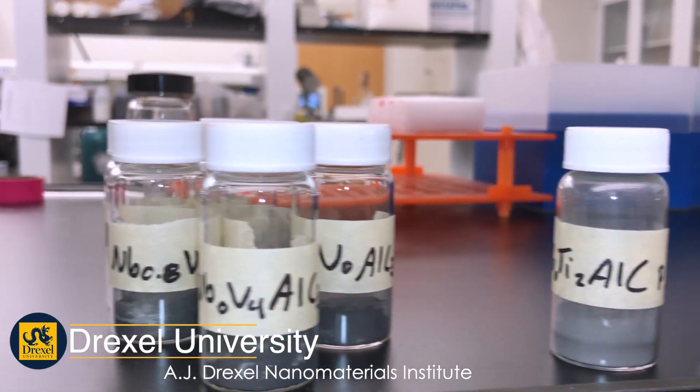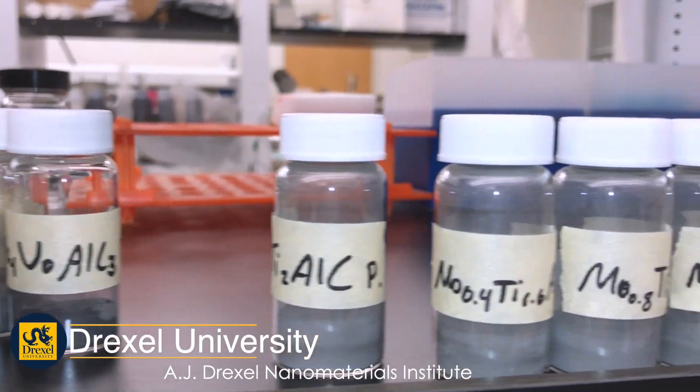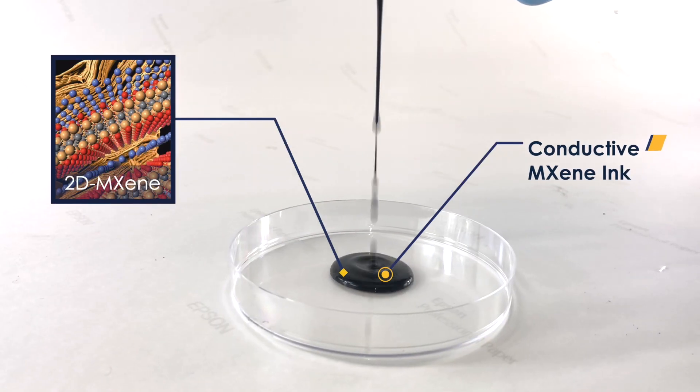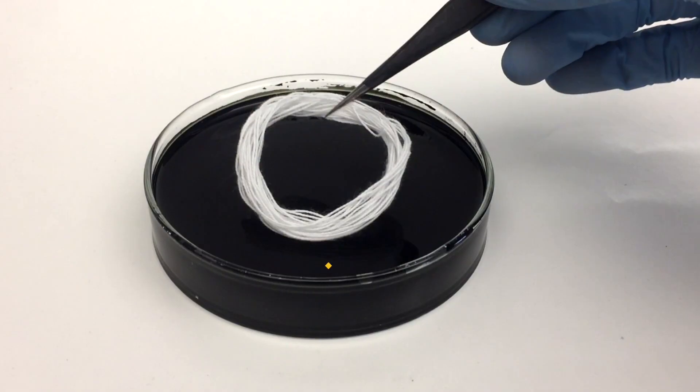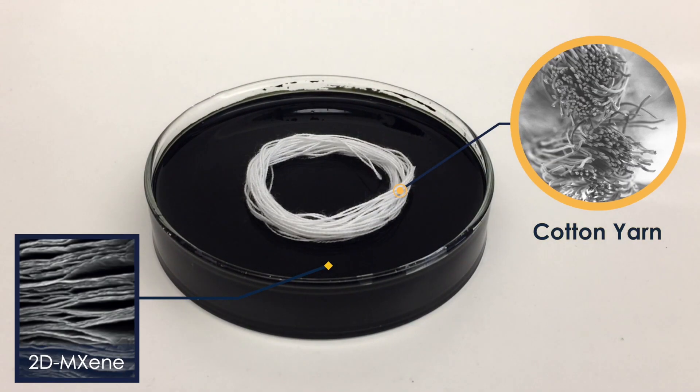At the AJ Drexel Nanomaterials Institute, we are working on integration of a family of two-dimensional nanoparticles discovered at Drexel called MXenes into abundantly available yarns such as cotton.